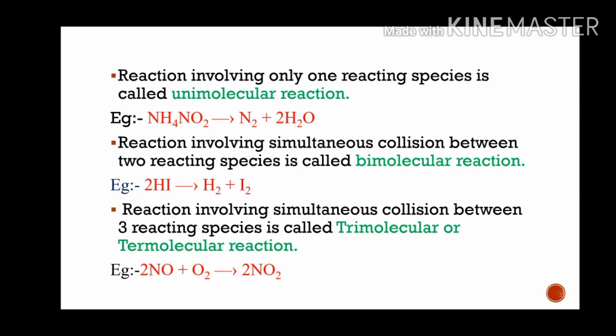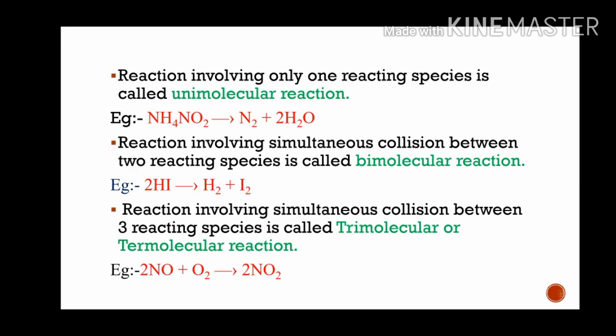A reaction involving simultaneous collision between two reacting species is called a bimolecular reaction — molecularity equals 2. A reaction involving three molecules colliding simultaneously is called a trimolecular or termolecular reaction — molecularity equals 3. For example: 2NO plus O2 giving 2NO2 is a termolecular reaction.